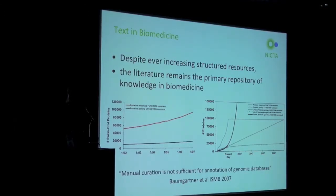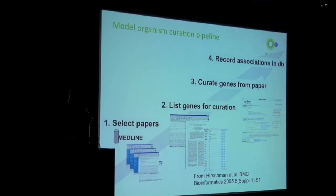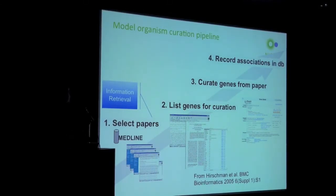We know that in the biomedical domain this is extraordinarily relevant. As we heard in the bio-curation talk earlier, there's a huge amount of data locked in textual form and it's a tremendous effort to keep up with that. The typical model organism curation pipeline looks something like this: we select papers, list genes in those papers for curation, curate genes from the paper, then record those associations in a database. At every step of the way, this is by and large a manual process — but one can imagine how text mining or natural language processing technologies can help.